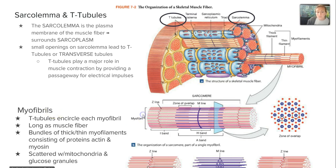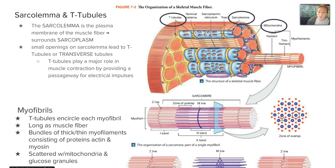The myofibrils are as long as the muscle fibers themselves. They are made up of thick and thin myofilaments consisting of the proteins actin and myosin. Scattered throughout are mitochondria — the powerhouses of the cell — because muscle cells need a lot of energy in order to contract. You'll also find glucose granules in there to support muscle contraction.